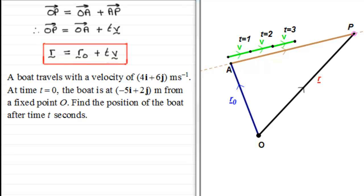So suppose we've got then a boat that travels with a velocity of 4i plus 6j meters per second. And at time t equals 0, the boat is at minus 5i plus 2j meters from the fixed point O. What we've got to do is find the position of the boat after time t seconds.